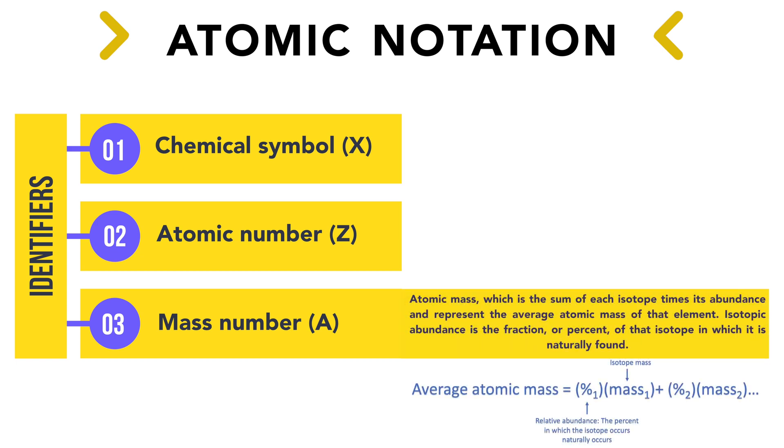Finally, we have the atomic mass, which is the sum of each isotope times its abundance and represents the average atomic mass of that element. Isotopic abundance is the fraction or percent of that isotope in which it is naturally found.